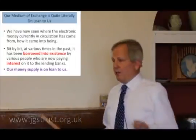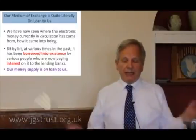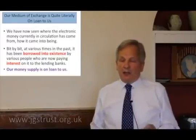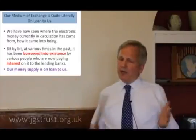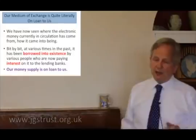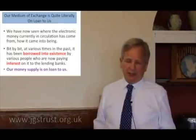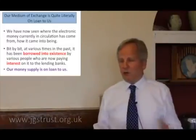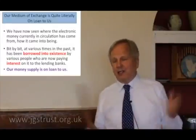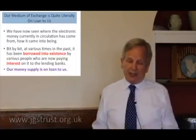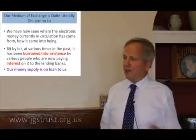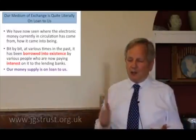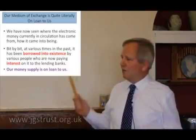We've now seen where this electronic money comes from, how it gets into circulation, how it comes into being. Looking back, you can see that bit by bit it's all been borrowed into existence by somebody. Those people who borrowed these digits into existence, got them into the banking system — they're paying interest on them. So every electronic pound going round and round the economy, some poor soul somewhere is paying interest on it.